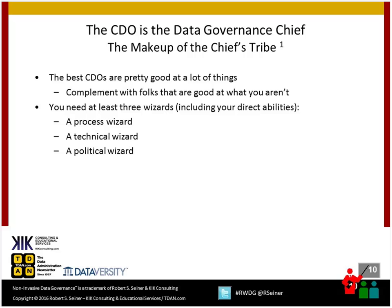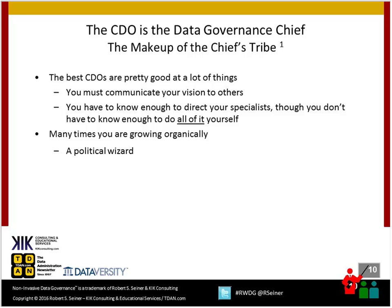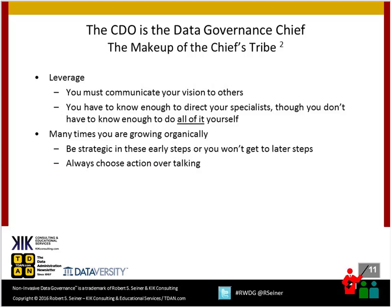Between those three — a technical specialist, a process specialist, and a business-collaboration political-type specialist — those are the things you know you'll need. Everyone has strengths, weaknesses, and resume gaps, so it will never be quite perfect. Bob loves the idea of the political wizard: getting people to realize that working with you is really working for them, helping to make them successful.